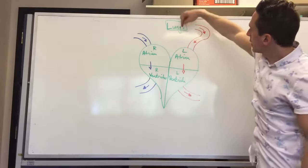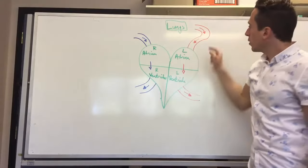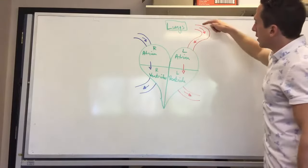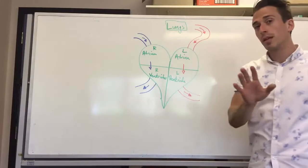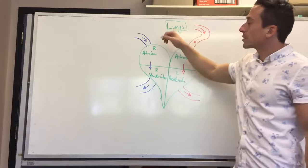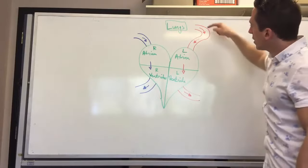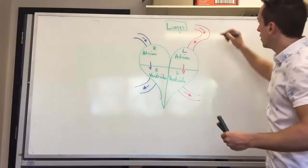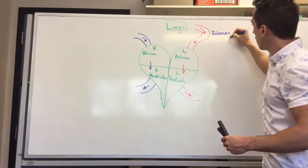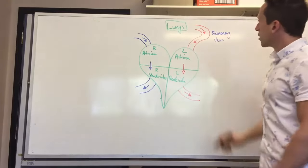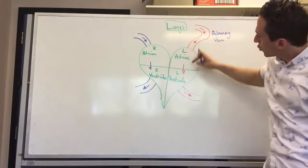The lungs give this blood oxygen, and the blood comes back to the left atrium. If you want to know the name of this vessel: it is a vein, and it's come from the lungs — when we refer to the lungs, we use the word pulmonary. So this is called the pulmonary vein. The pulmonary vein carries oxygenated blood from the lungs to the left atrium.